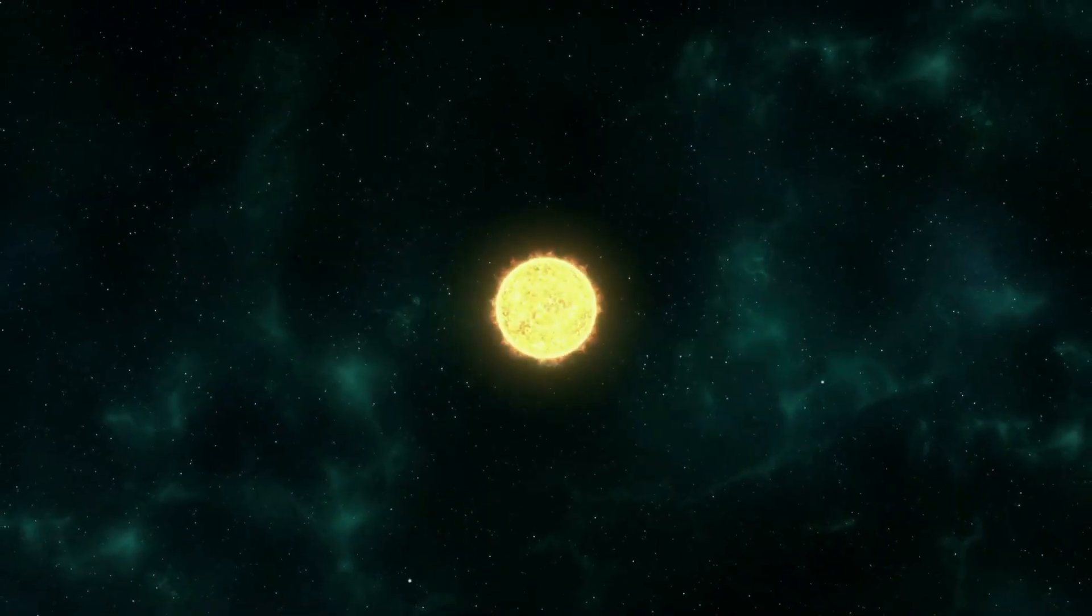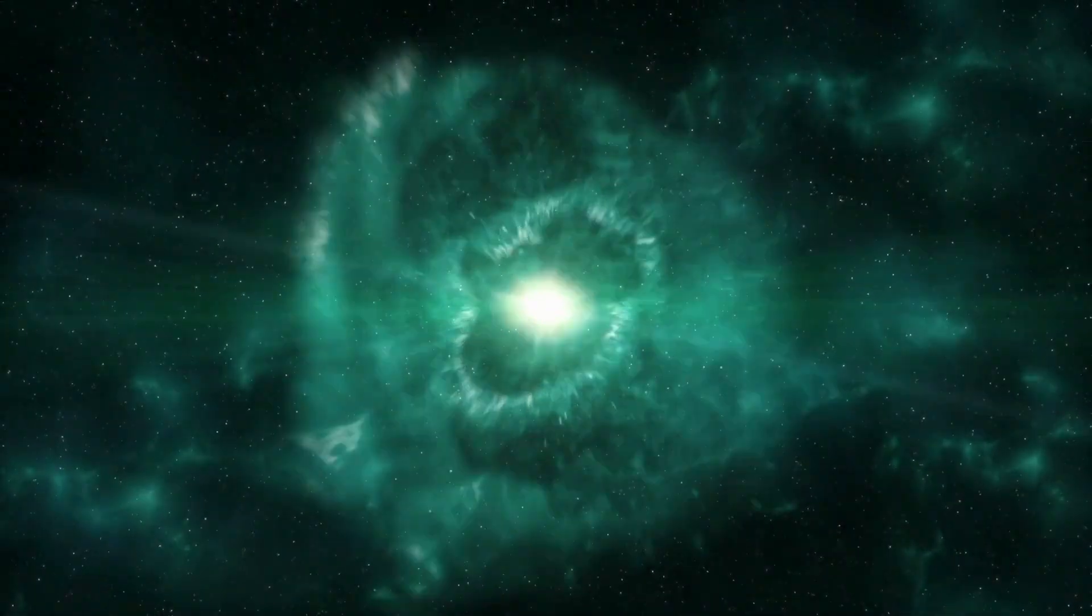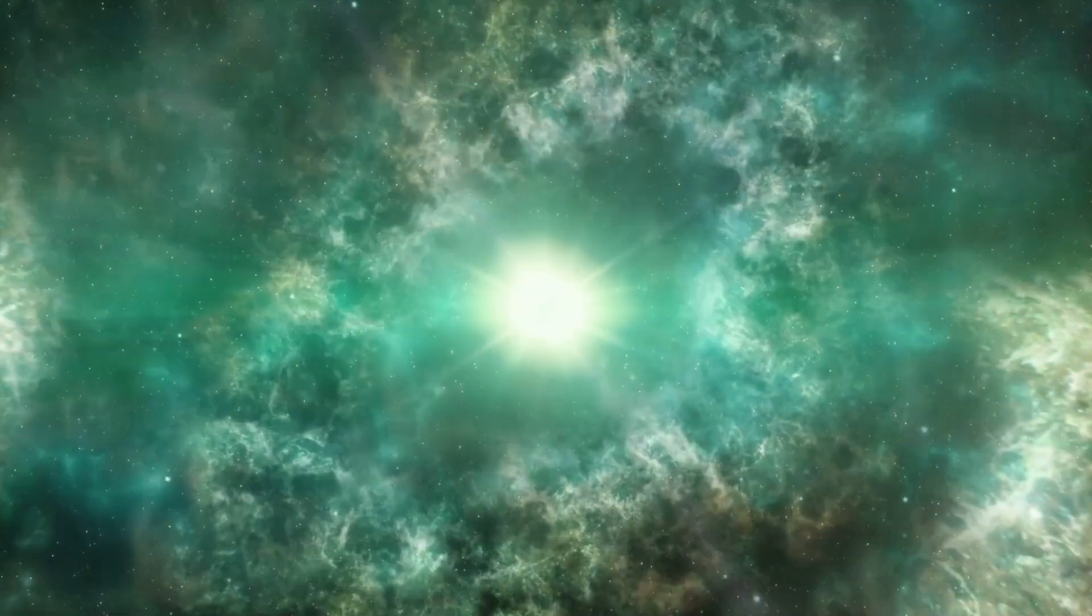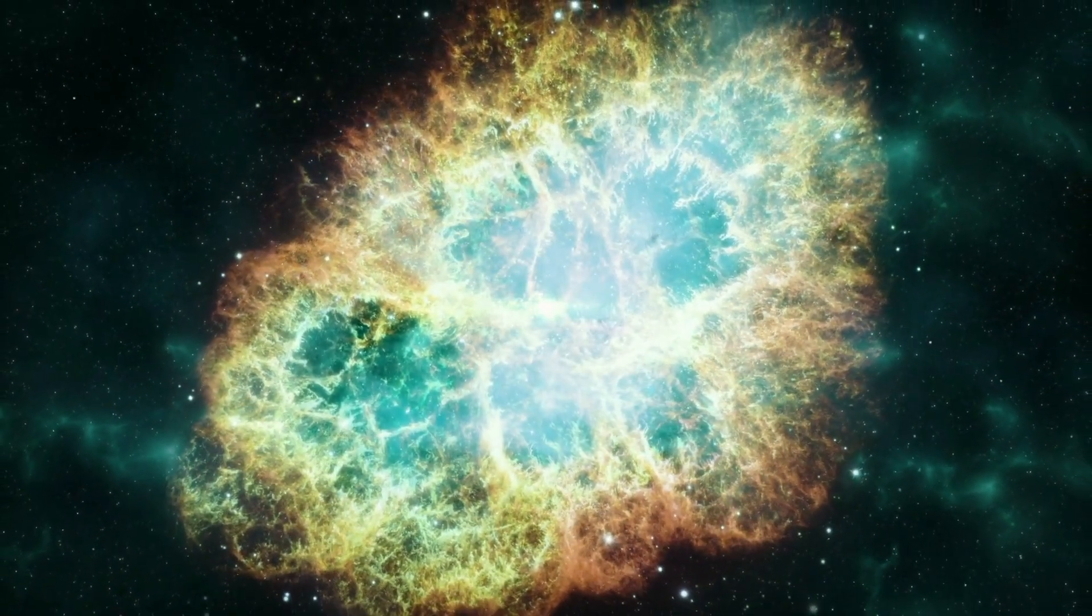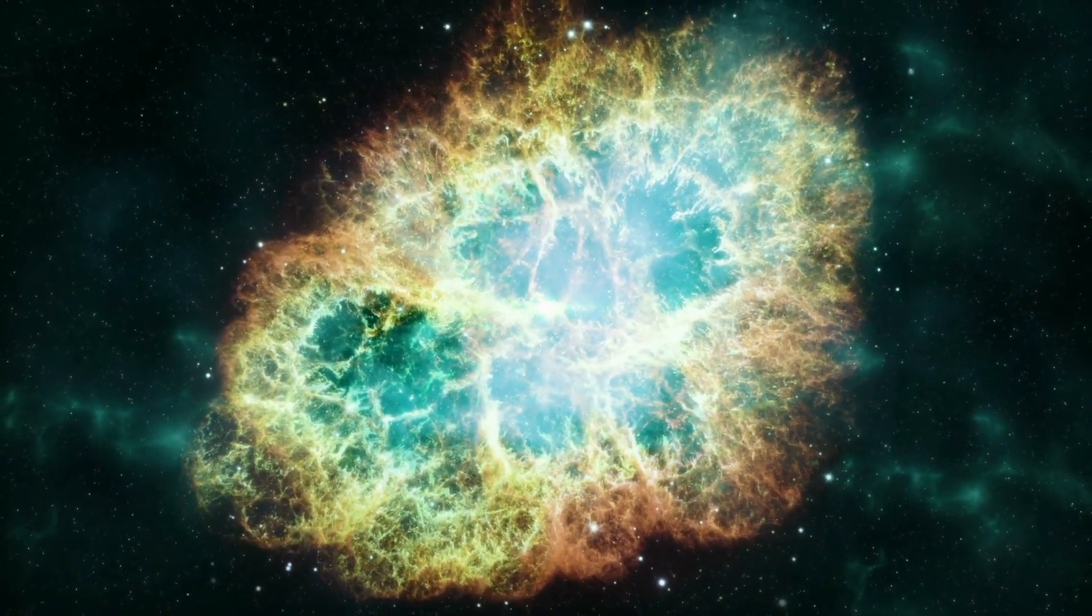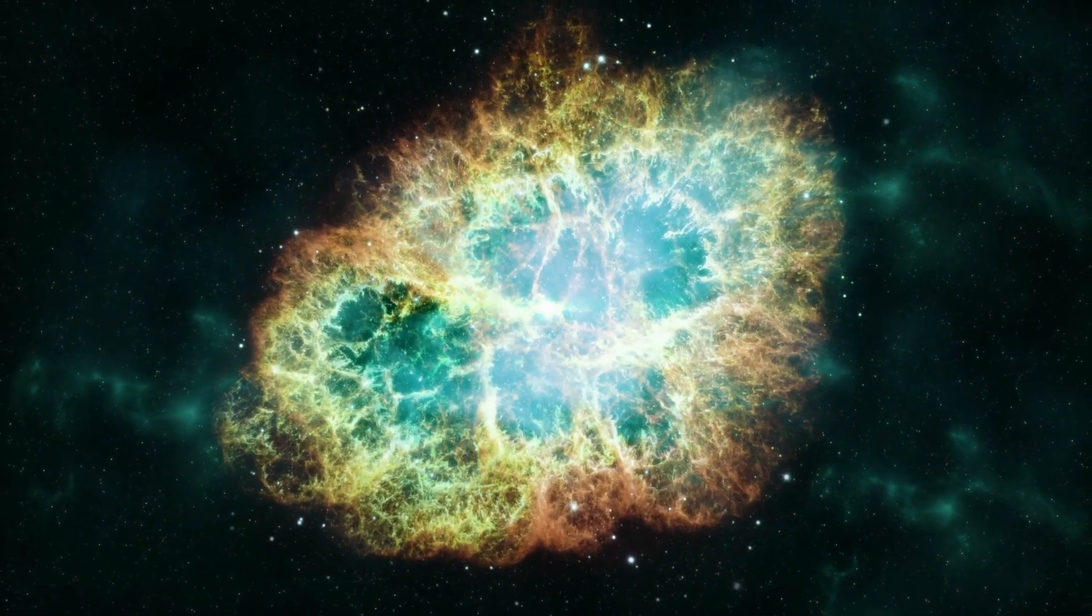A supernova is defined as the collapse and ultimate death of a star through a brilliant explosion, acting as the final stage of evolution for a star. From the ashes, one of two things are born, a black hole or a neutron star, which acts as either a pulsar or a magnetar.